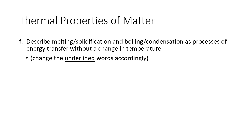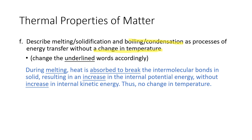Next are the typical explanation wordings you need to remember. These are usually asked to describe solidification, melting, or boiling as processes of energy transfer without a change in temperature. During melting, heat is absorbed to break the intermolecular bonds in solid, resulting in an increase in internal potential energy without increasing internal kinetic energy — so no change in temperature. For freezing, write the opposite: heat is released and intermolecular bonds are formed.